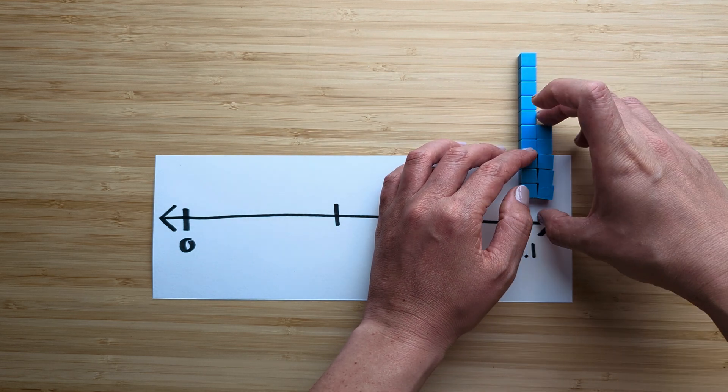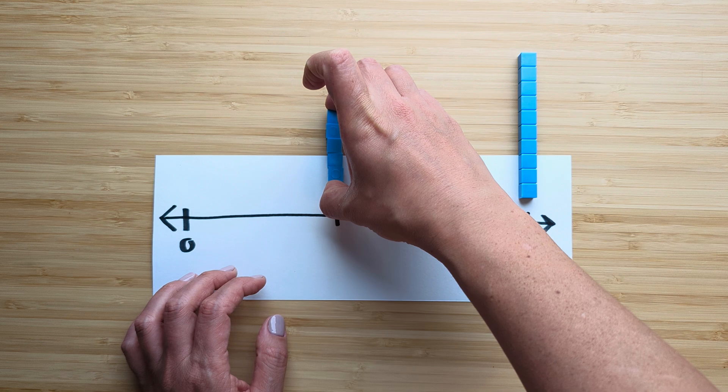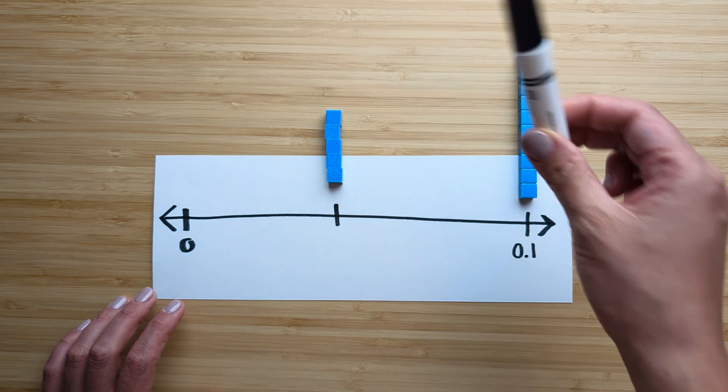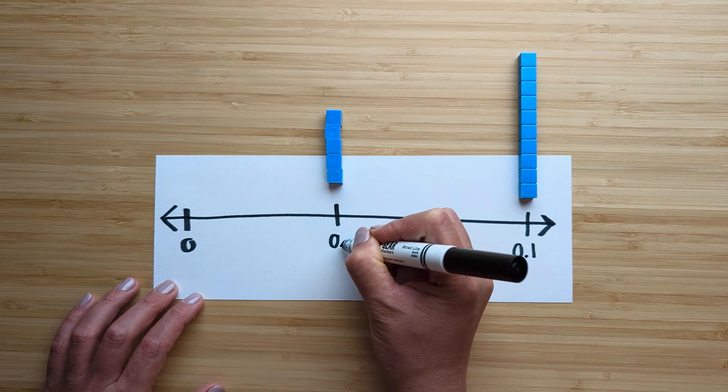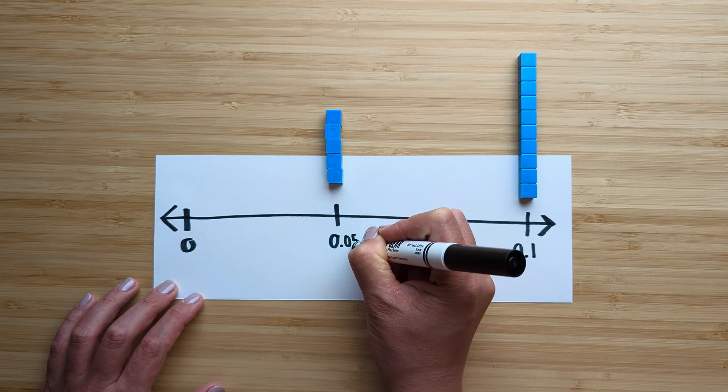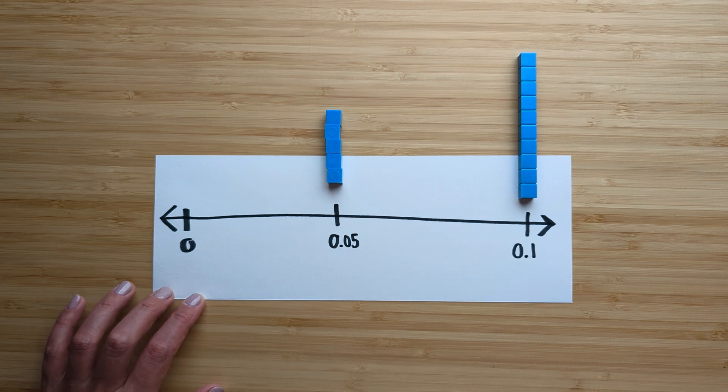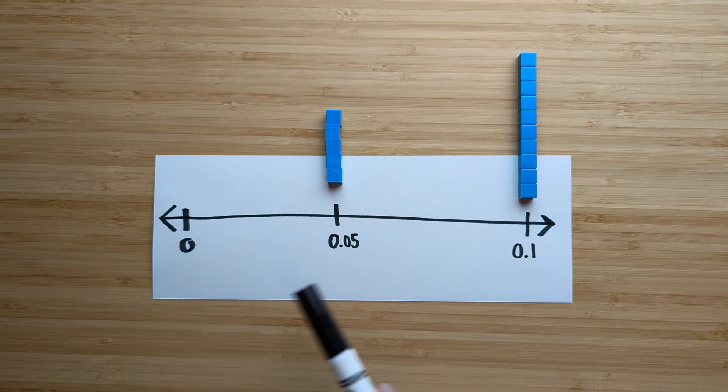So if I bring them over here and I count one, two, three, four, five, that would be five hundredths. And it should be easier to fill in the rest now.